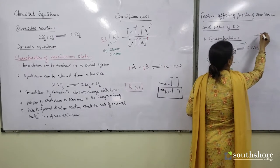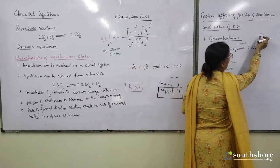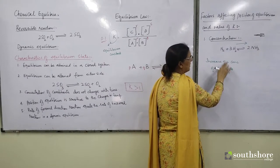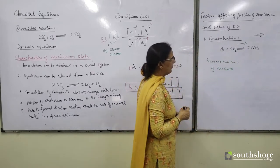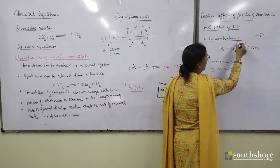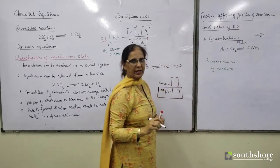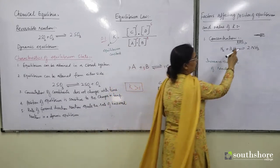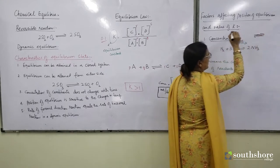Your forward direction arrow has become bigger in size and the backward direction arrow has become smaller in size. Why? Because increasing the concentration of reactants means more of the product is being formed, so the rate of forward direction reaction is greater. Position of equilibrium would be shifted towards the right-hand side for a while — until the length of both arrows becomes equal.